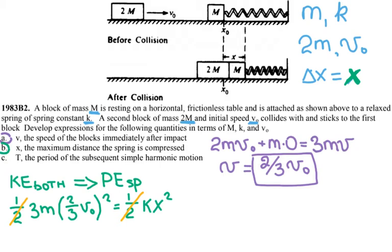So the maximum compression X is going to be equal to - I can simplify this part a little bit. Okay, so now I can take the square root of v₀ and take it out.